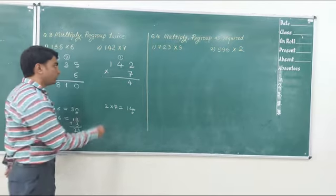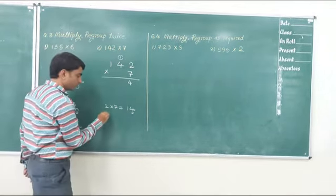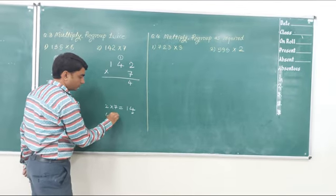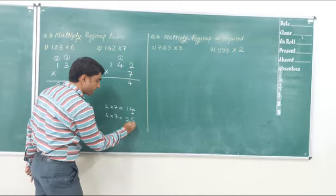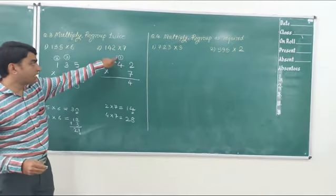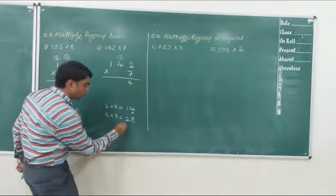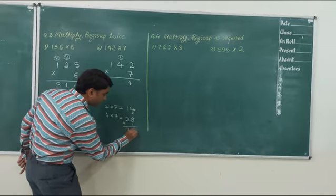Now, 4 multiply by 7. We need to multiply this 4 by 7. 7 fours are 28. In this 28, we need to add this carry, this 1. So we will add 1 to that. We will get 29.